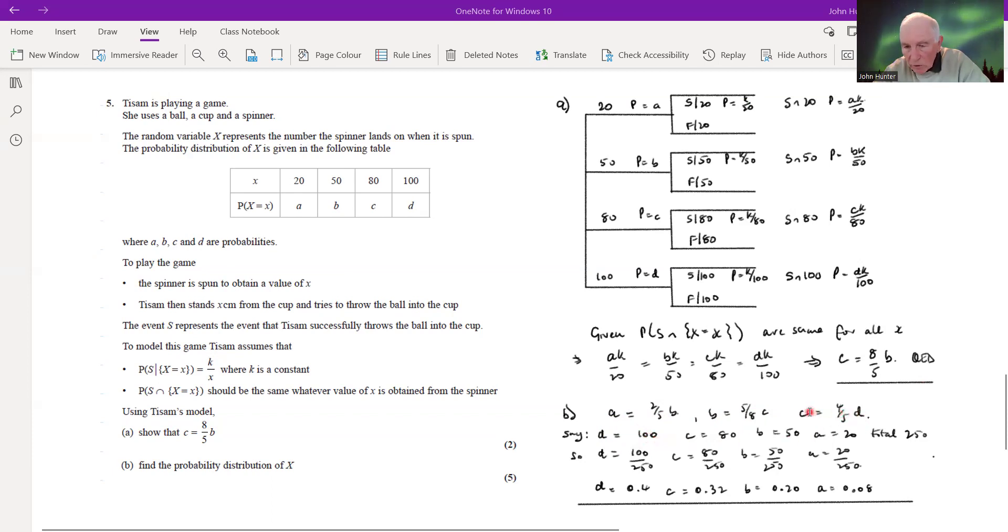So if we let d equal 100, what would that give us? Well, we work that backwards. We've got c, so c is 80. And then from this one, b is 50. And from this, then a is going to be 20. All right, well, that adds up to 250.